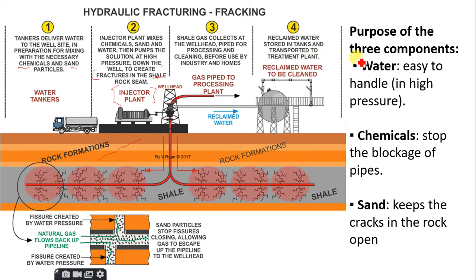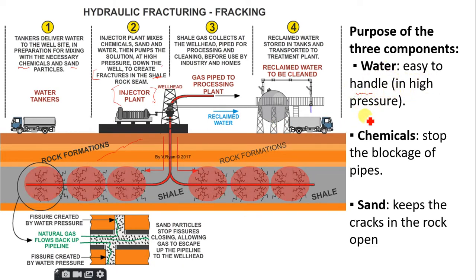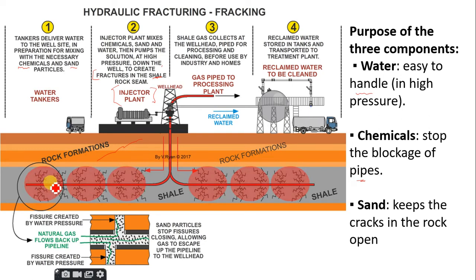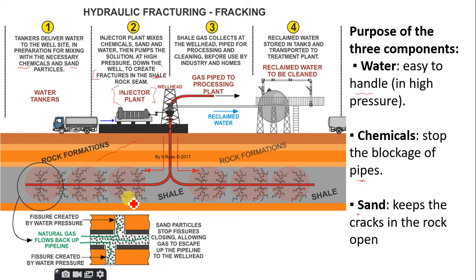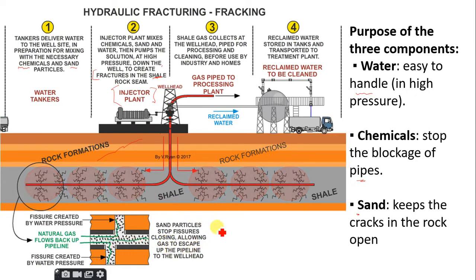The three components — water, sand, and chemicals — each serve a purpose. Water is easy to handle under high pressure, so it can be pushed down with force. Chemicals prevent the blockage of pipes so the gas and oil can pass through to the surface. Sand keeps the cracks in the rock open; sand particles stop the fissures from closing, allowing gas to escape to the surface.